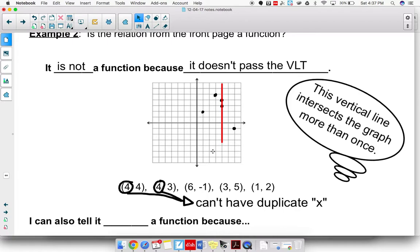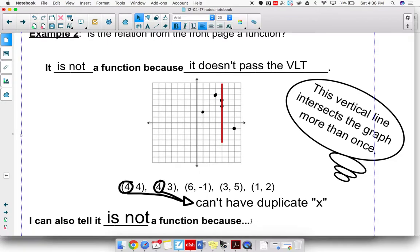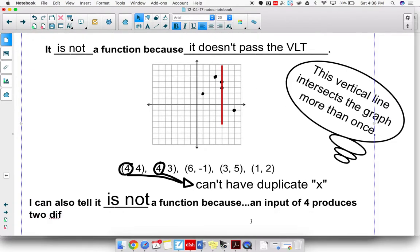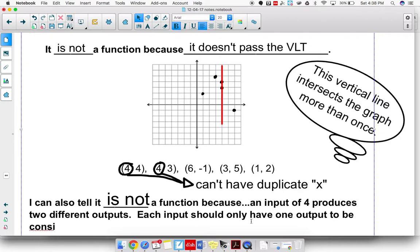Not that you can't have those ordered pairs, but again, the question is, is it a function? So I can tell that it is not a function because an input of 4 produces two different outputs. Each input should only have one output to be considered a function. So those are your key ideas for today.